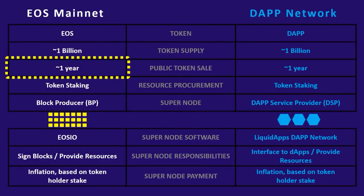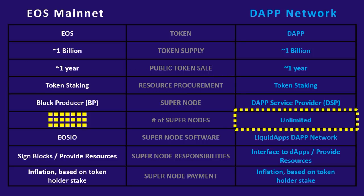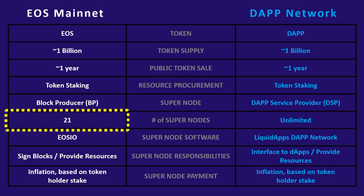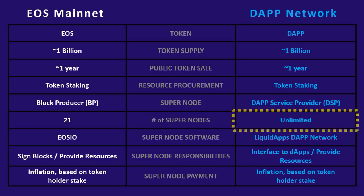A difference to note between the two is that there is no limit to the number of DSPs in the dApp network, whereas in EOSIO chains there is a set number of active block producers — 21. The dApp network will support as many DSPs as the free market supports.